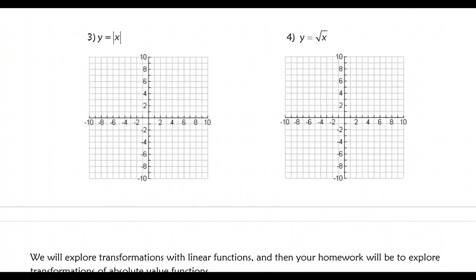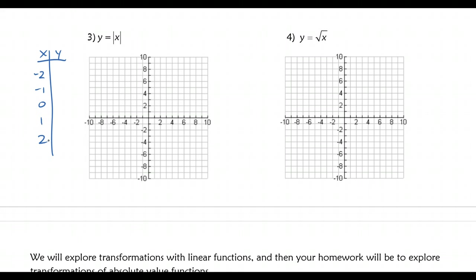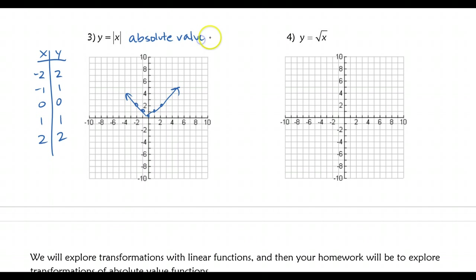For an absolute value function, y equals the absolute value of x. You can make a table and plug in any points — I'm going to do negative 2 to 2. Taking the absolute value of those gives the resulting table, and here's my v-shape. There is the basic mother function for an absolute value function — you should always get a v-shape.